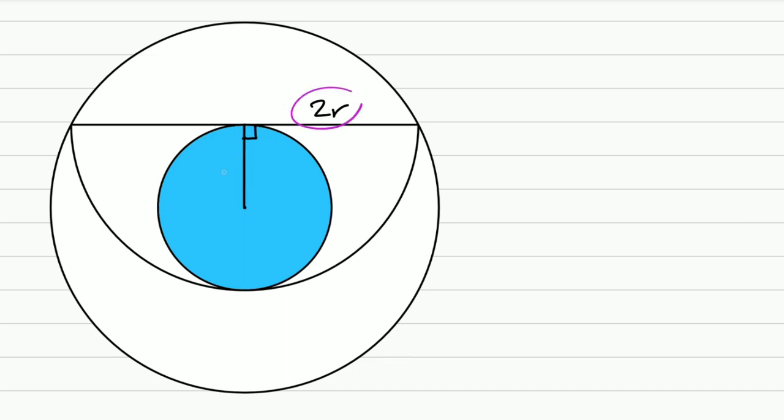Now we have 2 times R, this one's R, and the hypotenuse, if we draw it here, what is it? It's the radius of the bigger circle, right? Let's call it capital R. Big one.